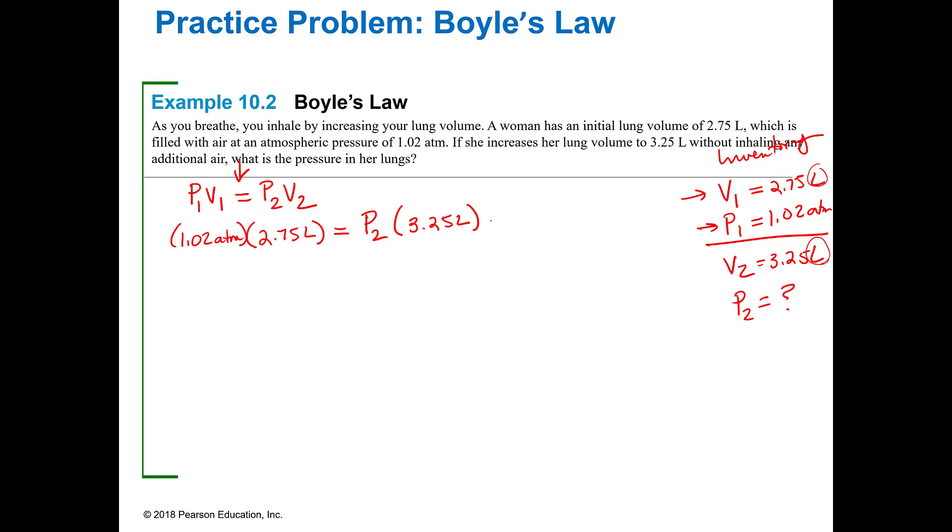So this is where our algebra is going to come in. To get rid of the 3.25 liters on this side, I divide both sides by that, which gets rid of that one. So then P2 is equal to 1.02 atmospheres times 2.75 liters divided by 3.25 liters. Liters will cancel, and that makes me joyous because that means that I'm going to have atmospheres as my unit. And when I put that into my handy dandy calculator, I get 0.863 atmospheres.